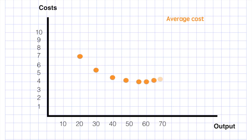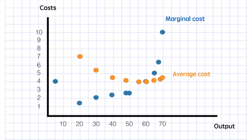Next, we'll bring the two together. The blue dots represent marginal cost and the orange represent average cost. While marginal cost is lower than average cost, average cost continues to fall. At output 60, marginal cost and average cost are equal. And beyond this level of output, marginal cost is higher than the average. Let's look at it on a graph that you are more likely to see in your studies.